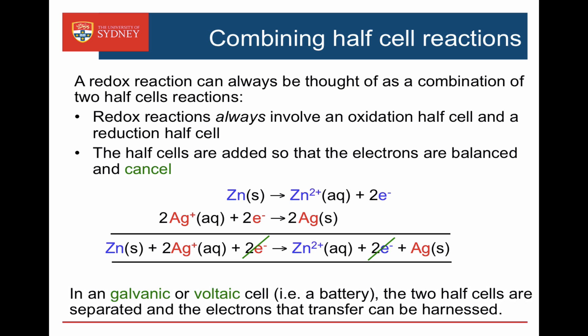I can do this in one beaker or I can actually separate them. If I separate them into two beakers, I've ended up with a galvanic cell or a battery, and the electrons involved in the reaction can be harnessed to give me energy for my devices.